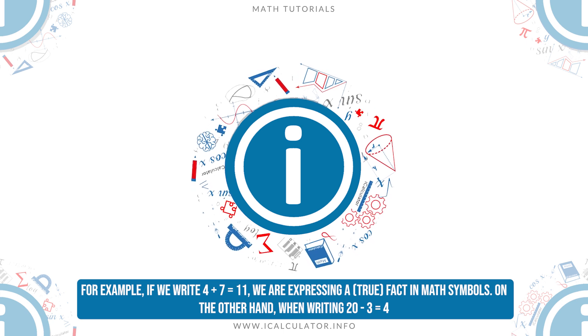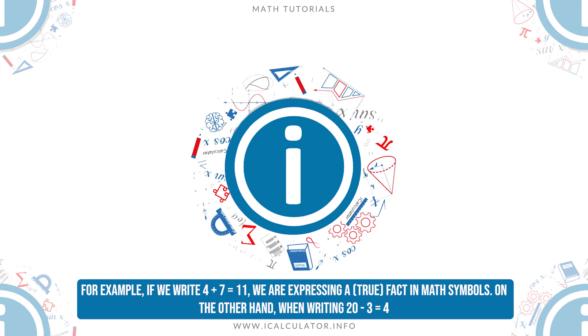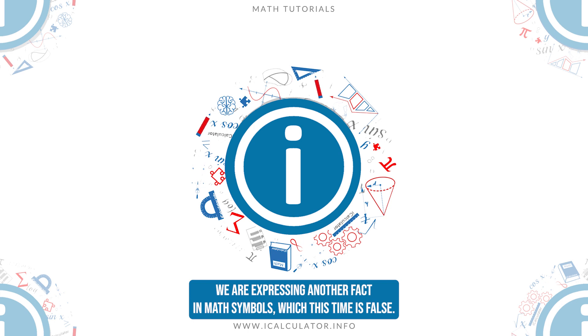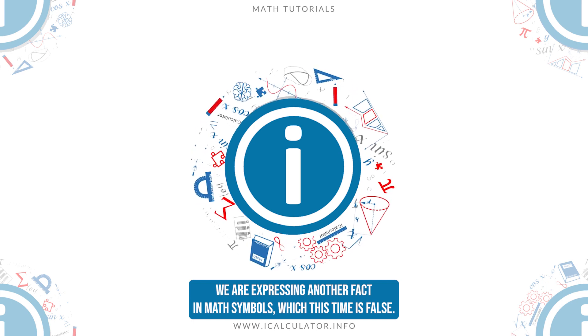On the other hand, when writing 20 minus 3 is equal to 4, we are expressing another fact in math symbols, which this time is false.